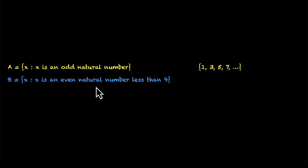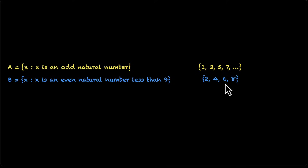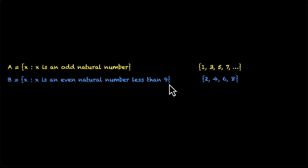Let's take another example. X is an even natural number which is less than 9. So we have a restriction here. The list will be 2, 4, 6, and 8. These are the only 4 elements because we are looking for even natural numbers that are less than 9. How many elements do we have? We have 1, 2, 3, 4 — we have 4 elements.